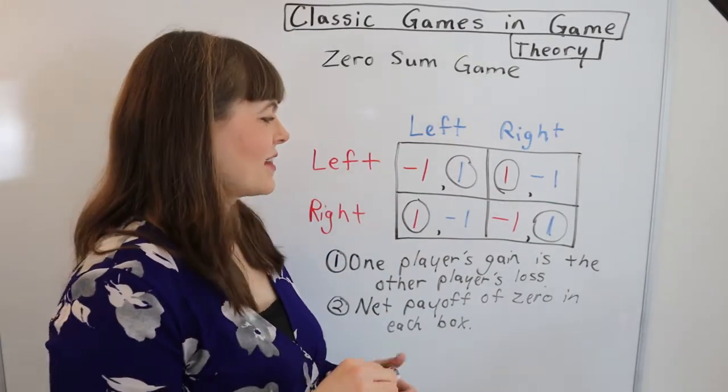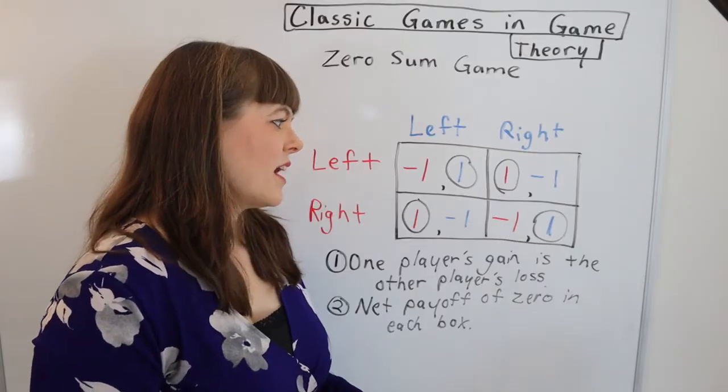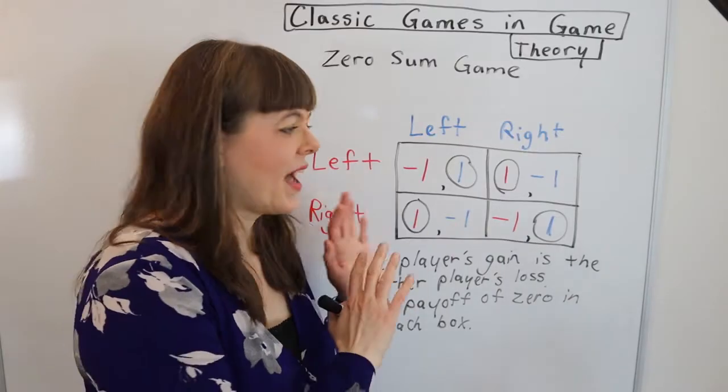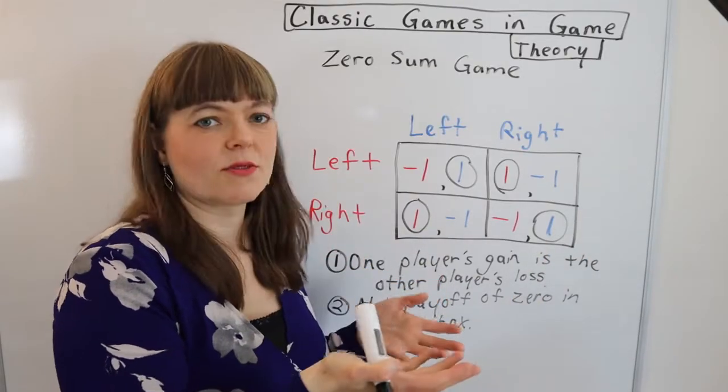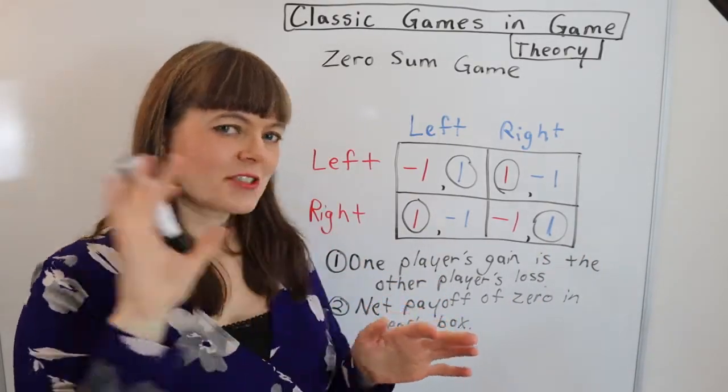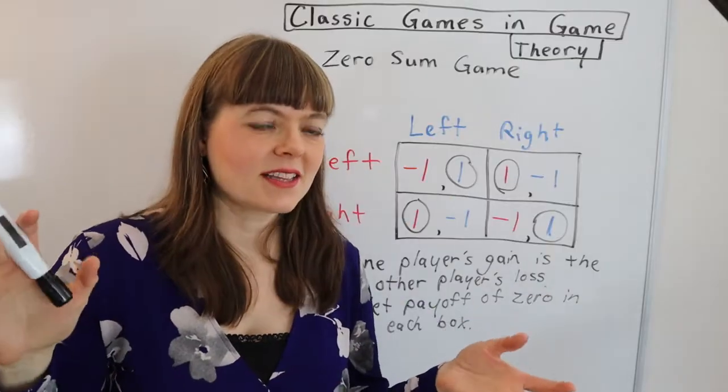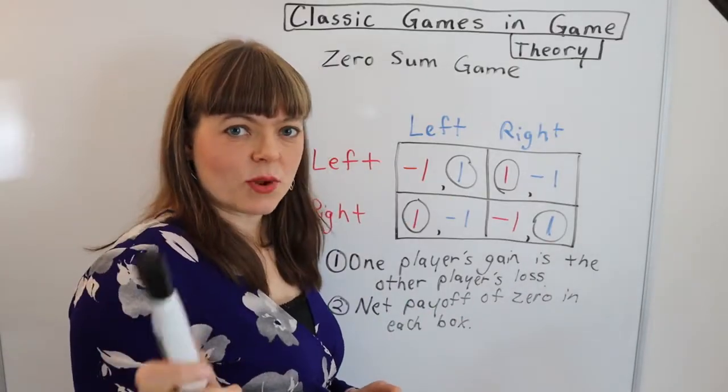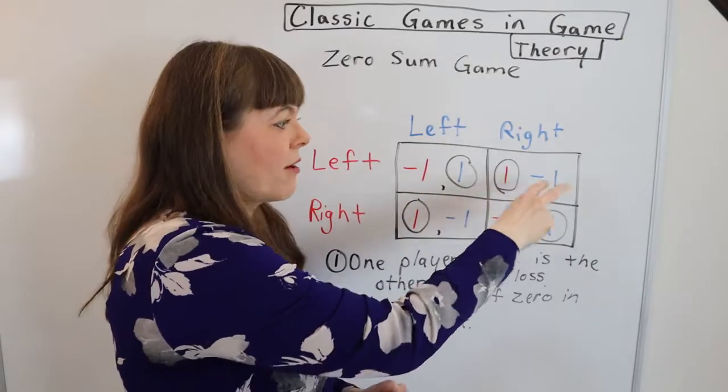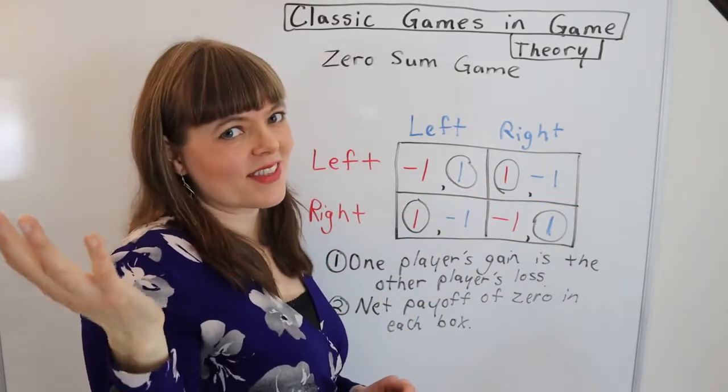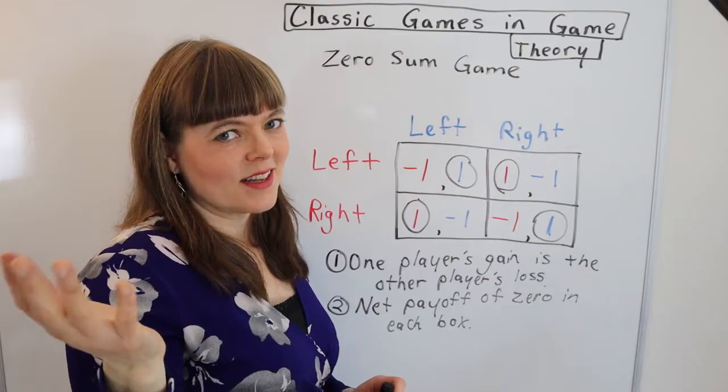One interesting thing I'd like to point out is can you just add the same number to all of these and still get a zero sum game? I think there's an argument for that and an argument against that. So I'm going to test this. I'm going to add two to every single payoff in this table and we'll see if the Nash equilibrium changes. And hint, it's never going to change.